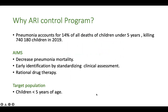Why an ARI control program? Because pneumonia accounts for 14% of all deaths of children under five years of age, and even in 2019, more than 7 lakh children died due to pneumonia. The main aim of this program is to decrease pneumonia mortality by early identification and appropriate drug therapy, targeting children less than five years of age.